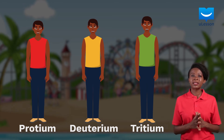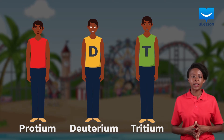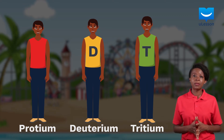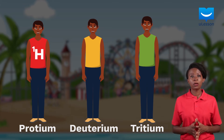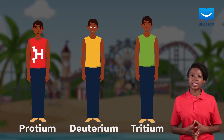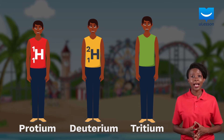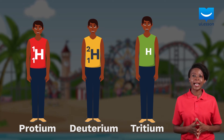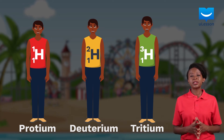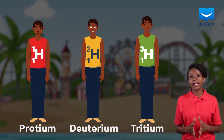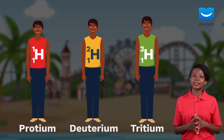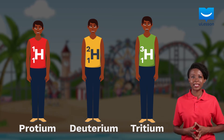Deuterium and tritium are sometimes represented by the letters D and T respectively, but it is recommended to represent them using their standard isotopic symbols. Symbolically, protium is represented as hydrogen-1, deuterium as hydrogen-2, and tritium as hydrogen-3. To understand the similarities and differences between these isotopes, let's examine the number of protons, neutrons, and electrons in their respective atoms.